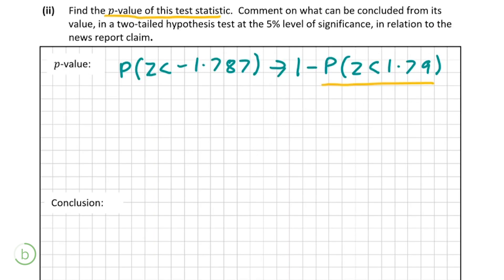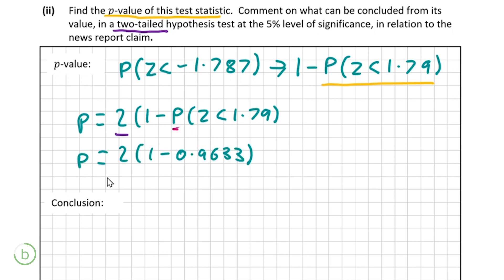Since this is a two-tailed test, the p-value is 2 × (1 − P(z < 1.79)). Substituting 0.9633, we get p-value = 2 × (1 − 0.9633) = 0.0734. That is our p-value correctly computed.